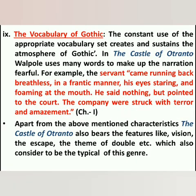After this, we have the vocabulary of gothic. In The Castle of Otranto, Walpole uses many words to make the narration fearful. For example, a servant came running back breathless in a frantic manner, his eyes staring and foaming at the mouth. He said nothing but pointed to the court. The company were struck with terror and amazement. This type of vocabulary makes the narration of gothic novel more fearful.